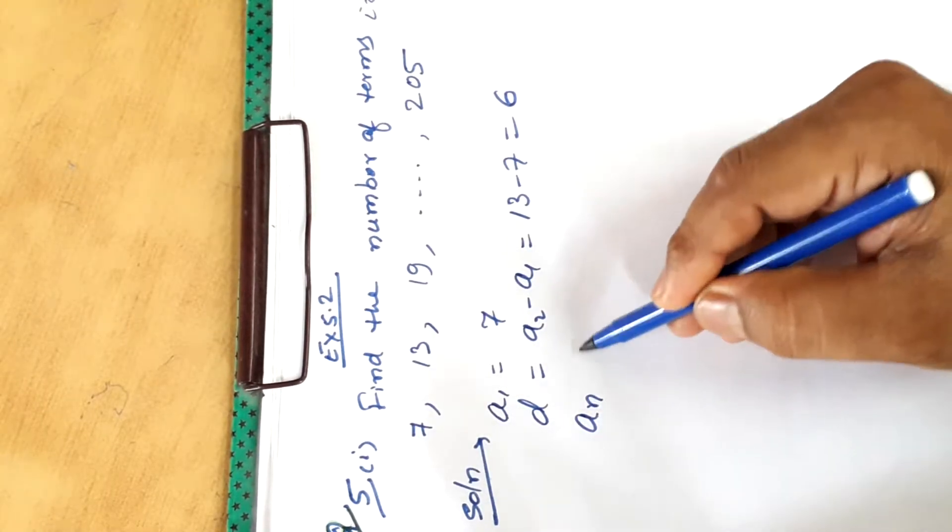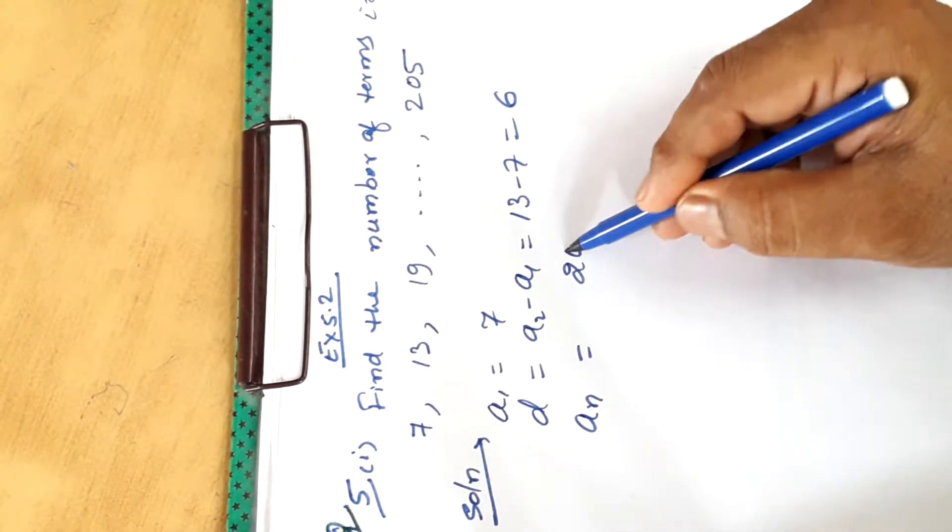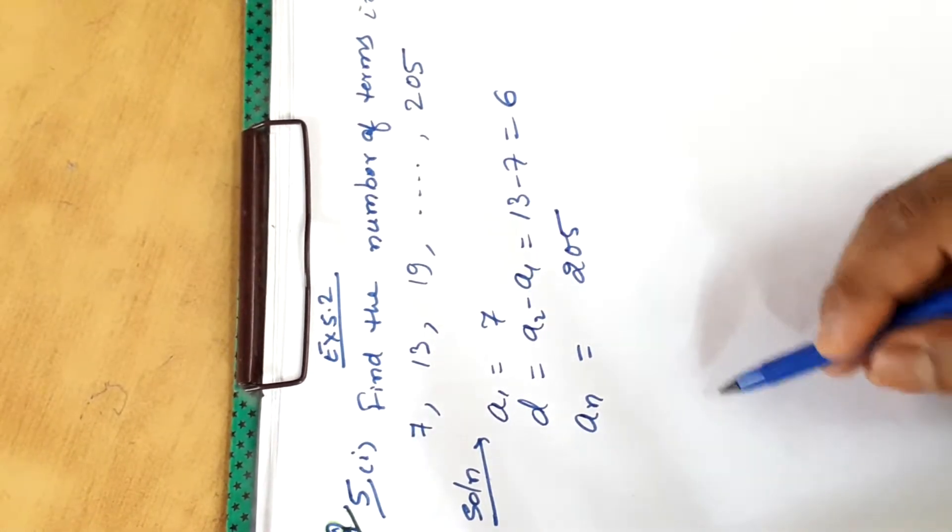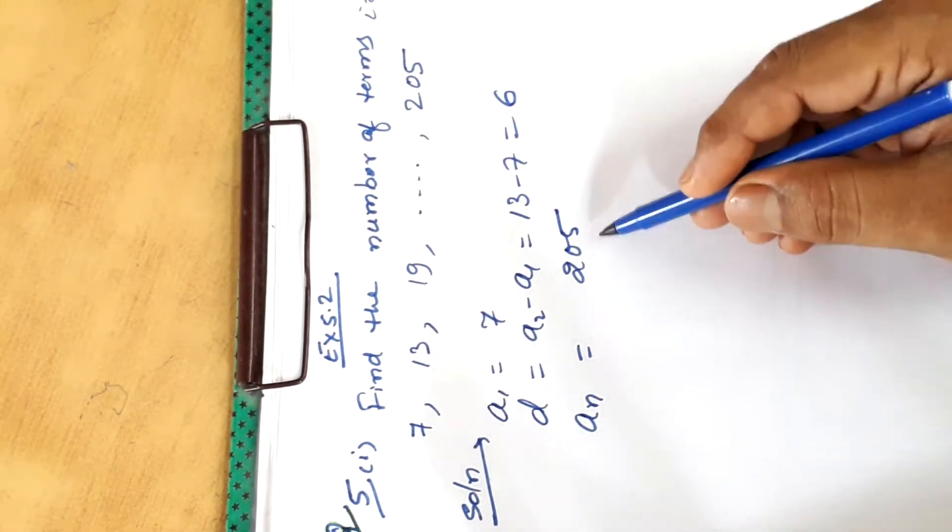Now AN, that is last term of this AP, is 205. We have to find N.